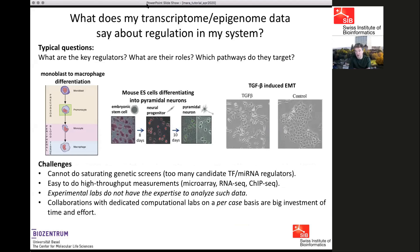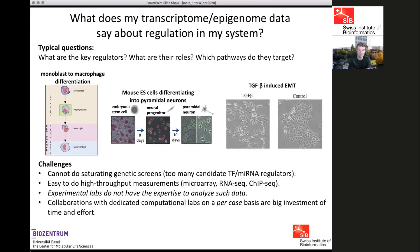The kind of problem we focused on is one we have collaborated on with many experimental groups. These groups want to know what high-throughput transcriptome or epigenome data says about the regulation going on in their system of interest. The typical questions are: what are the key regulators in my system, what are their roles, and which pathways are targeted by each regulator? The challenge is that it's impossible to do a saturating genetic screen — humans have about 2,000 transcription factors and hundreds of microRNA families.